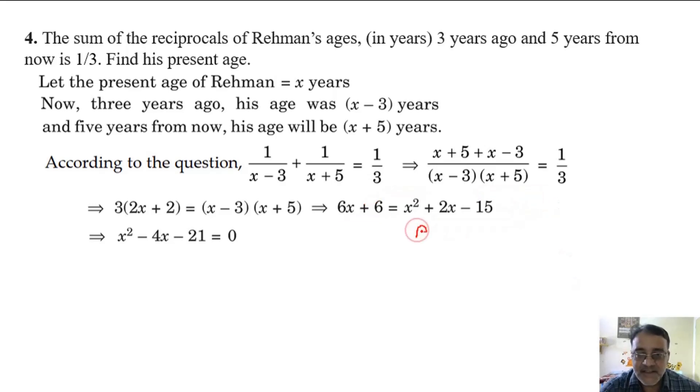Now the product is minus 21 and the sum is minus 4. So 21 has two factors whose difference should be 4. 7 and 3. Very good. The sum's sign goes on the larger number, the other gets the opposite sign.